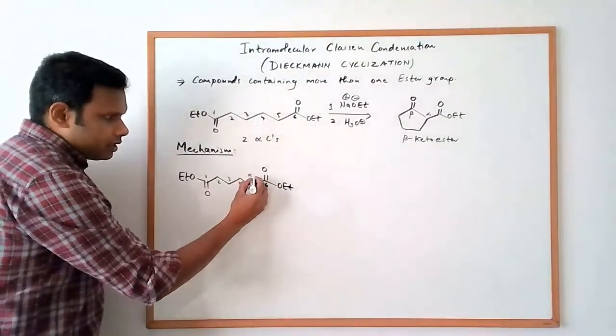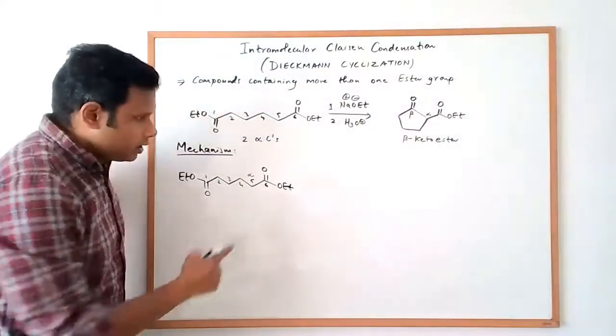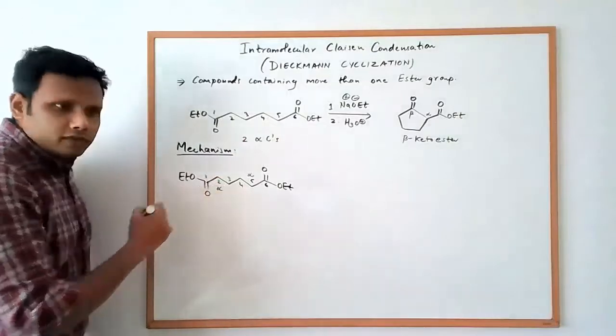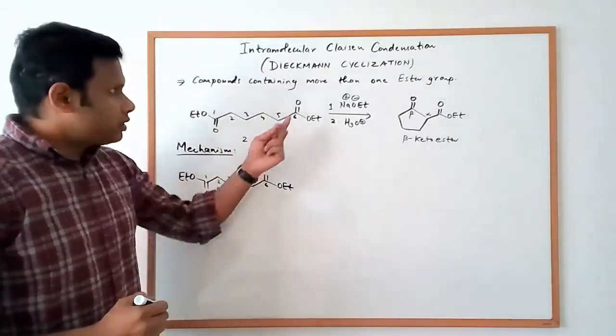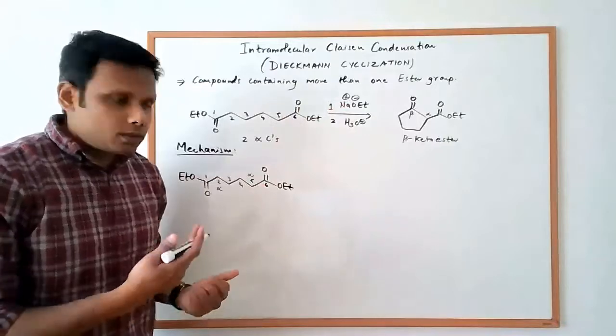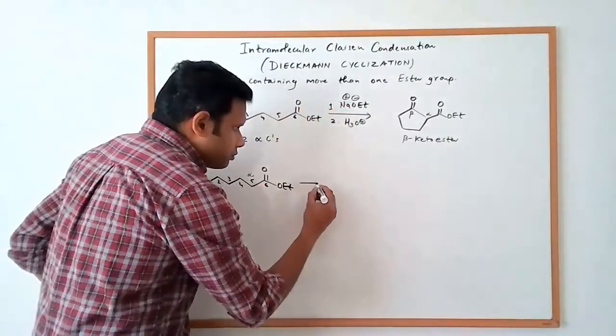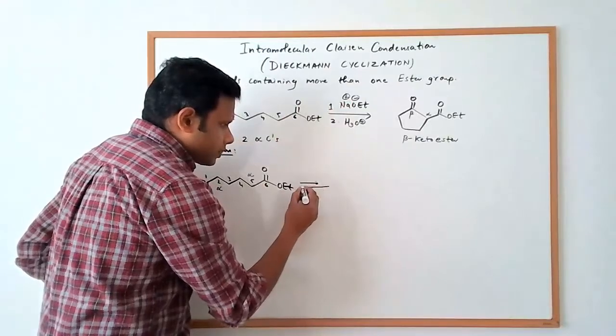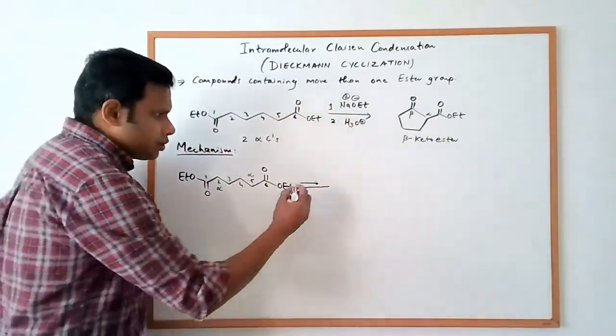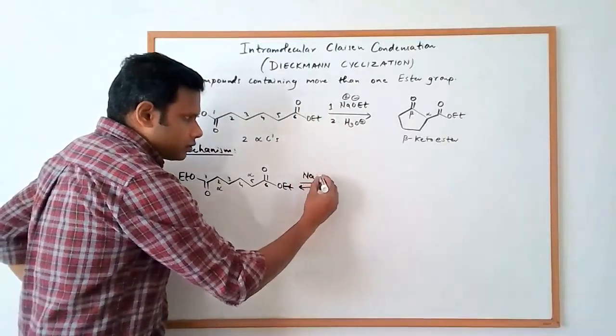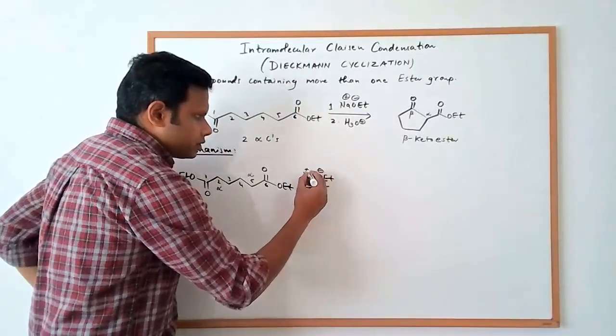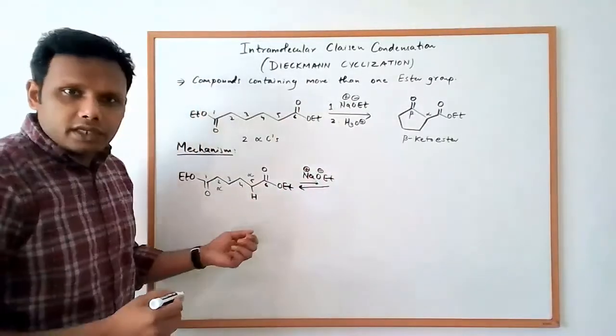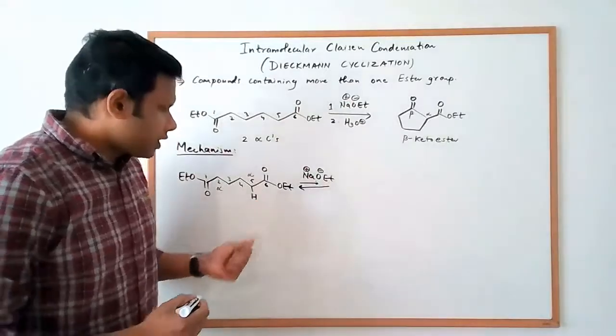This is a molecule with two alpha carbons. Carbon 5 is alpha to the ester at carbon 6, and carbon 2 is alpha to the ester at carbon 1. Which means when this diester reacts with the base, you can in principle make two enolates. And again, the formation of the enolate is not that favored. So the equilibrium does not favor the enolate formation.